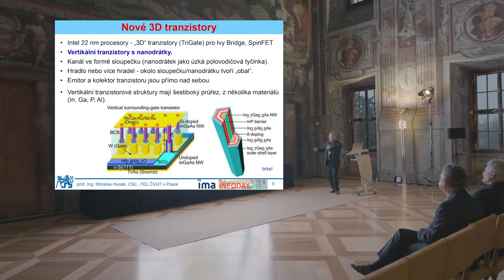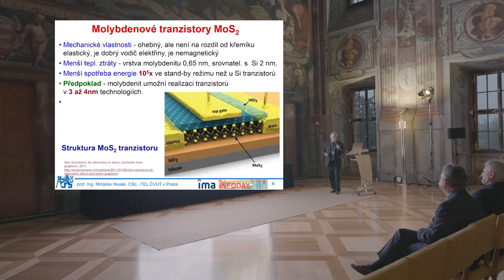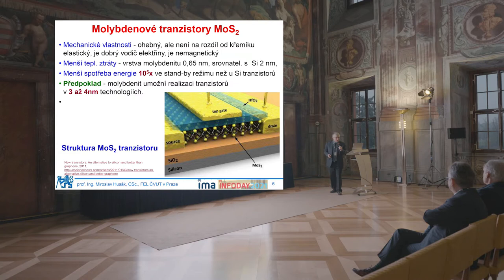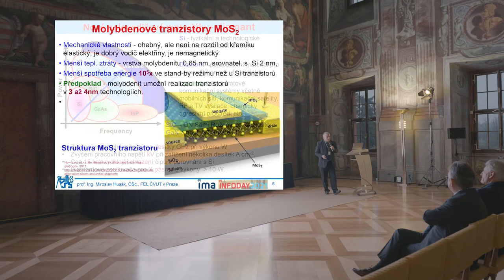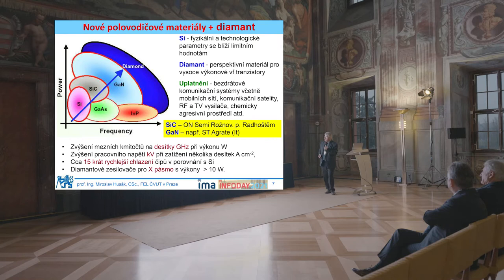We now have completely new structures — vertical transistors and nanotechnologies, processes, and everything. We have new materials, for example molybdenum, where we have a transistor. The energy consumption in standby regime is reduced by a factor of 10^5. We could use 3 to 4 nanometers, which is already in the quantum area.